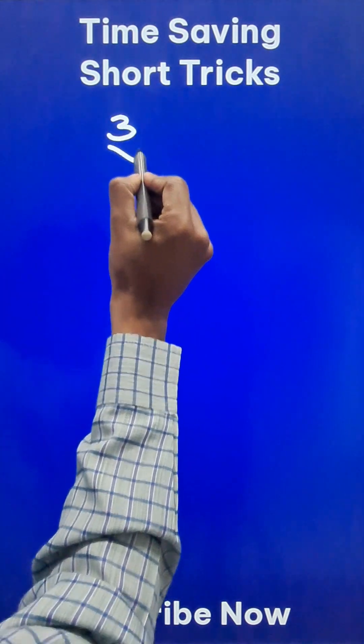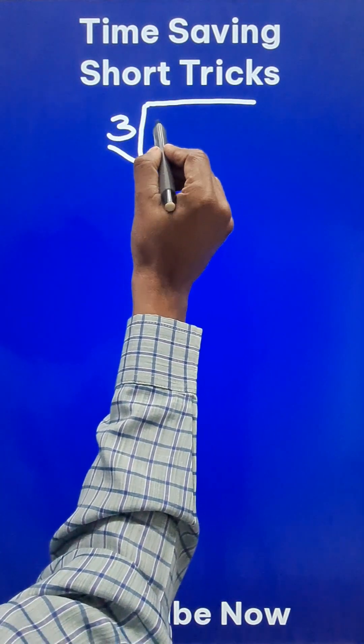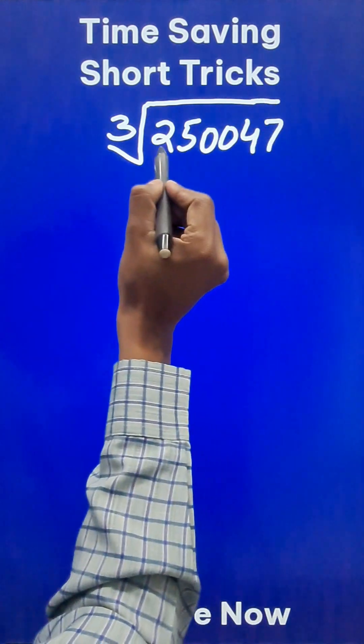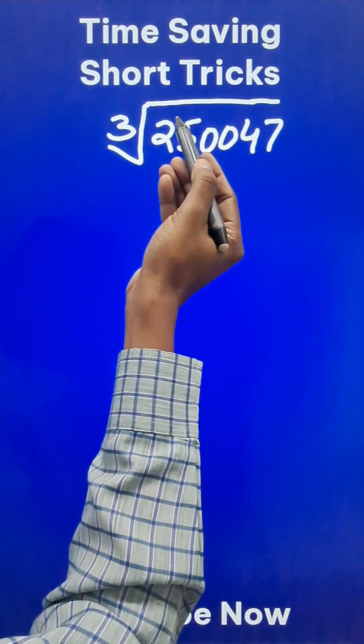Let's find the cube root of a big number like 2, 5, 0, 0, 4, 7. It's a huge six-digit number. So what is a cube root? You can actually guess it directly.